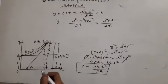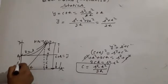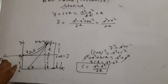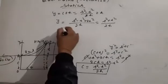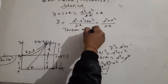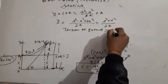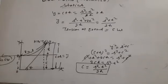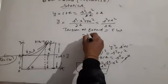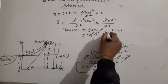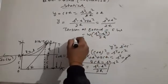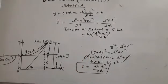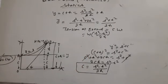Tension at ground: T_0 equal to cW. Putting C value, T_0 equals W(L square minus H square) upon 2H. This is tension at ground.